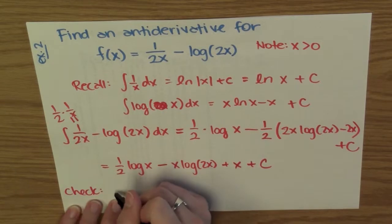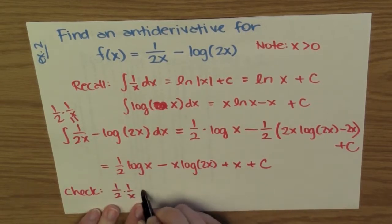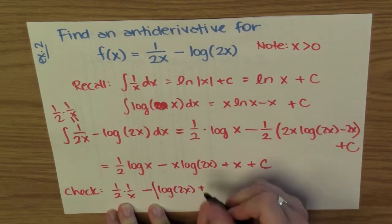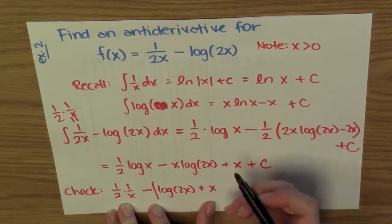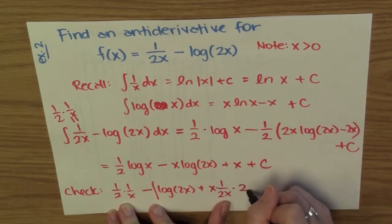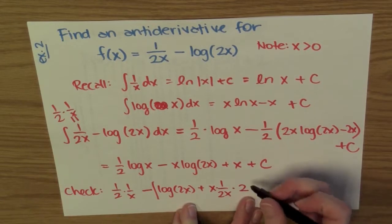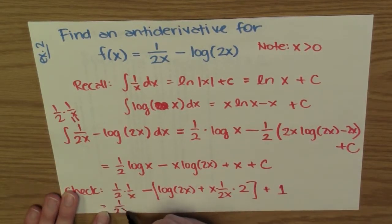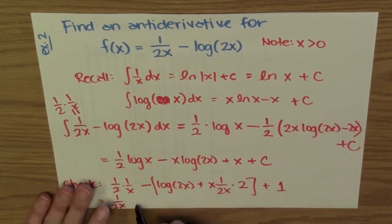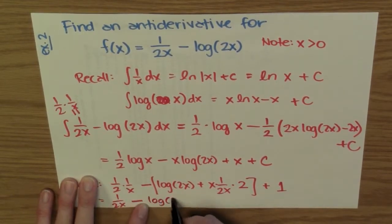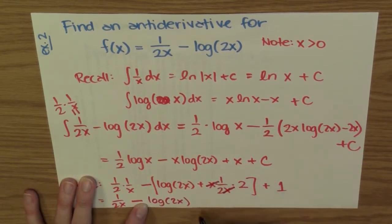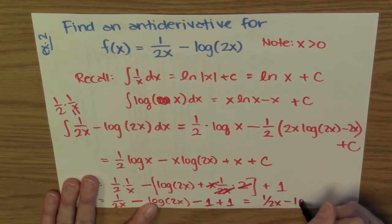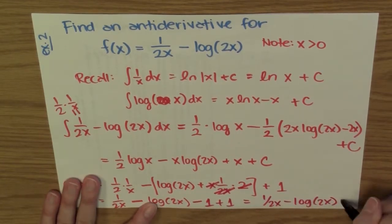We check our work by differentiating. Differentiating (1/2)·log(x) gives (1/2)·(1/x) = 1/(2x). For the -x·log(2x) term I use the product rule: I get -[log(2x) + x·(1/(2x))·2], which simplifies to -[log(2x) + 1]. The derivative of +x is 1, and the derivative of c is 0. So I have 1/(2x) - log(2x) - 1 + 1, which equals 1/(2x) - log(2x) — the function I started with.